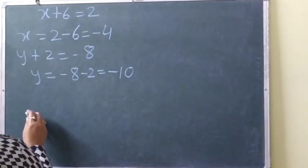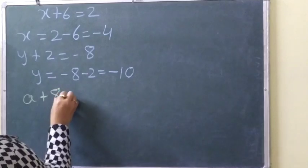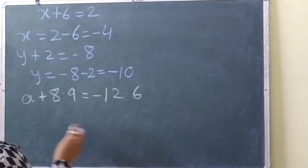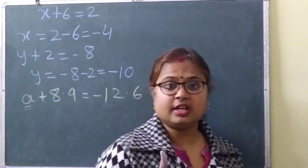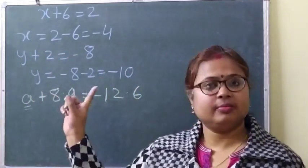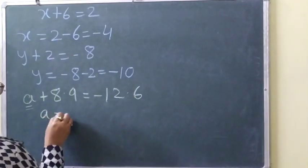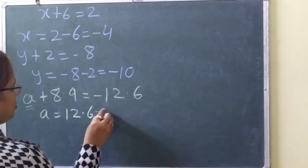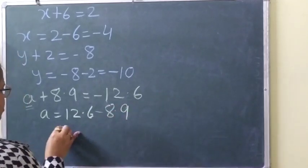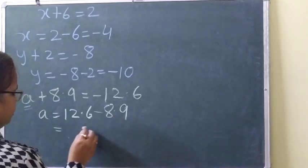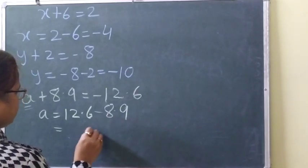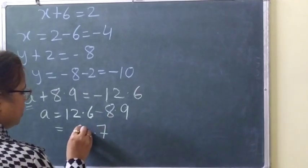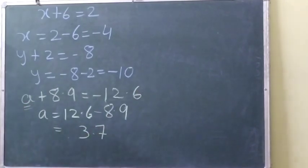Next question: if a plus 8.9 is equal to minus 12.6, how will we solve it? We have to find the value of a. So a will be equal to minus 12.6 minus 8.9. When we subtract: 16 minus 9 is 7, and 11 minus 8 is 3. So the answer will be minus 21.5.